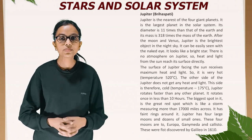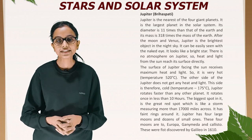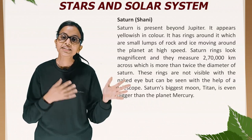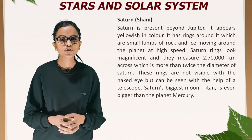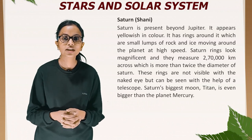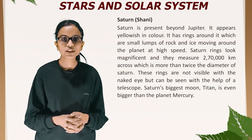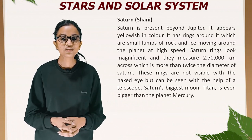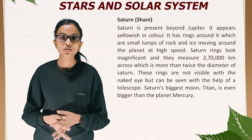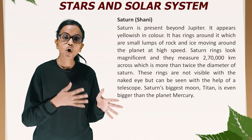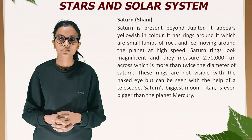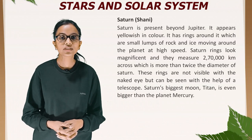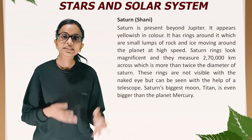Saturn is present beyond Jupiter and appears yellowish in color. It has rings around it made of small lumps of rock and ice moving at high speed. Saturn's rings measure 270,000 kilometers across — more than twice the diameter of Saturn itself. These rings are not visible with the naked eye but can be seen with a telescope.